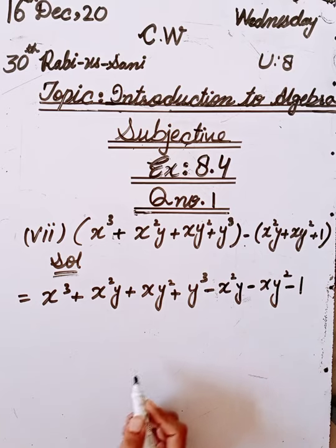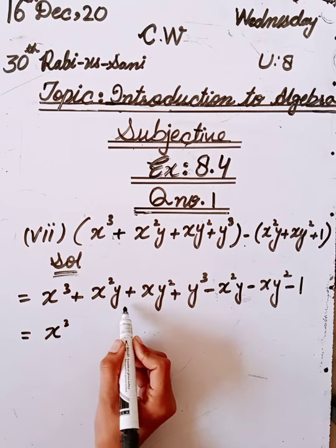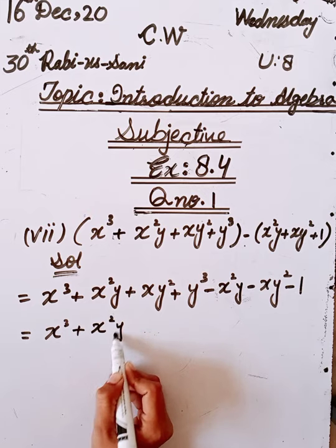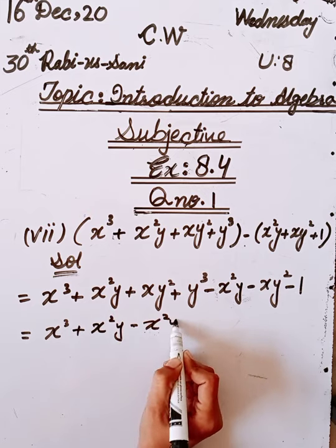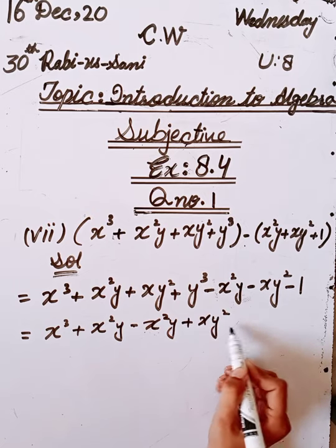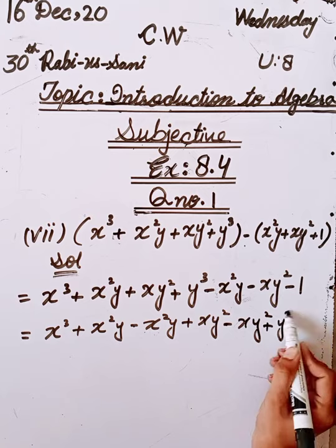Now we will combine the like terms: x³, x²y minus x²y will cancel, plus xy² minus xy² will cancel, and y³ as it is.